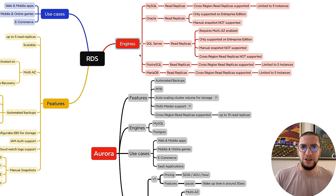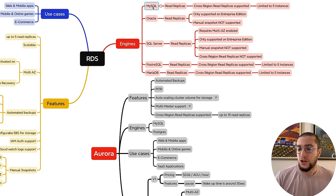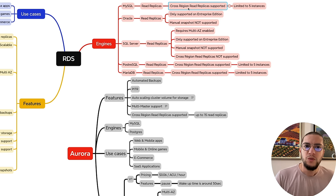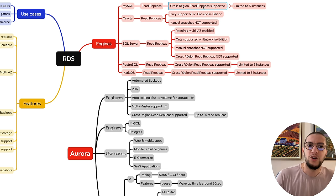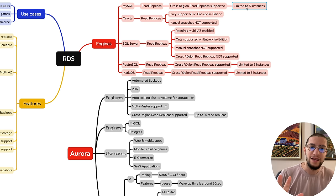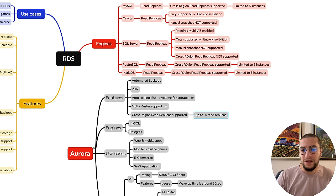Let's start looking at the engines first. RDS supports MySQL, Oracle, SQL Server, and more. From a read replicas perspective, MySQL supports cross-region read replicas, but only limited to five instances. If you need more — up to 15 instances — you want to go to Aurora.